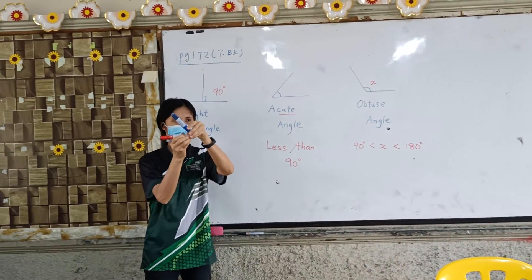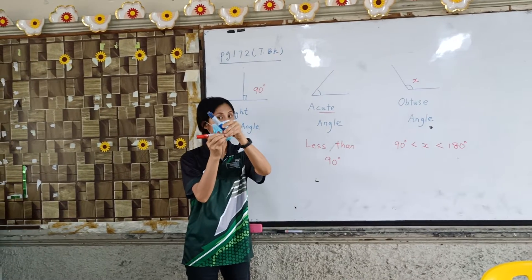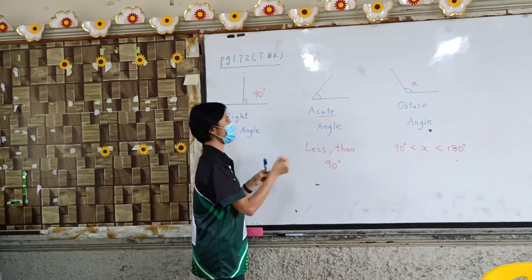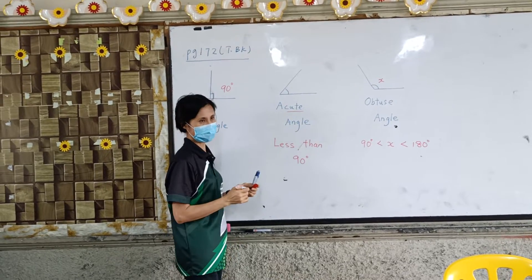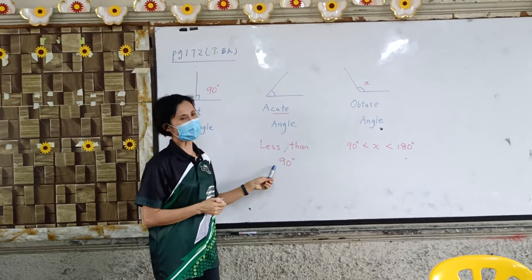And then, if the angle less than 90, like this. Small, right, so remember, cute, very cute, so we got a cute angle. A cute angle is less than 90 degrees.